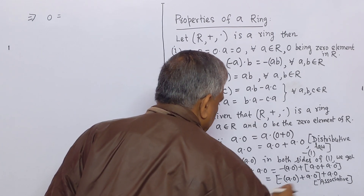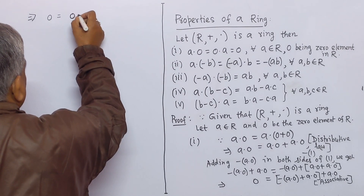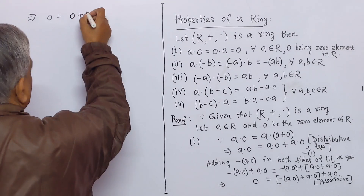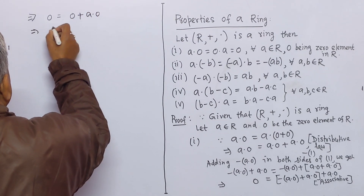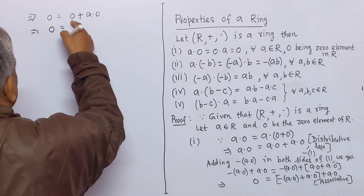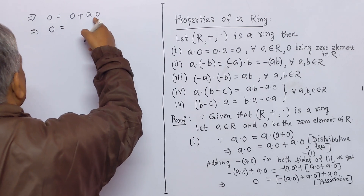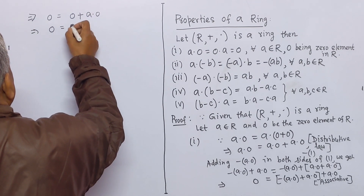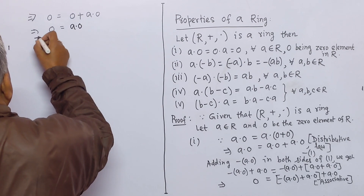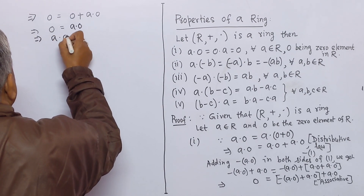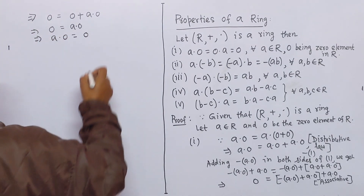This implies 0 equals 0 plus a·0, which gives 0 equals a·0. This is equation number 2, establishing that a·0 = 0.